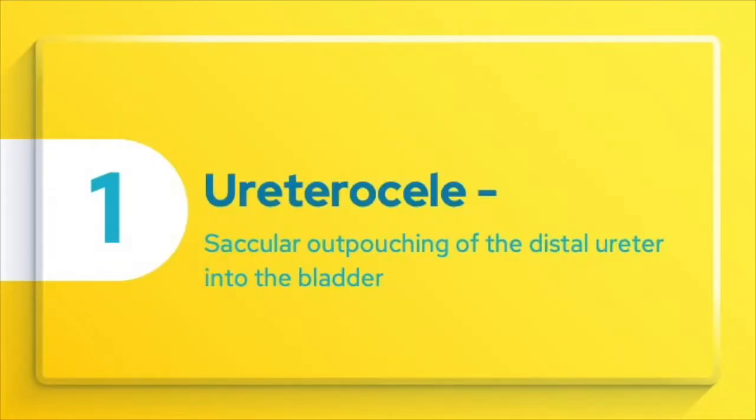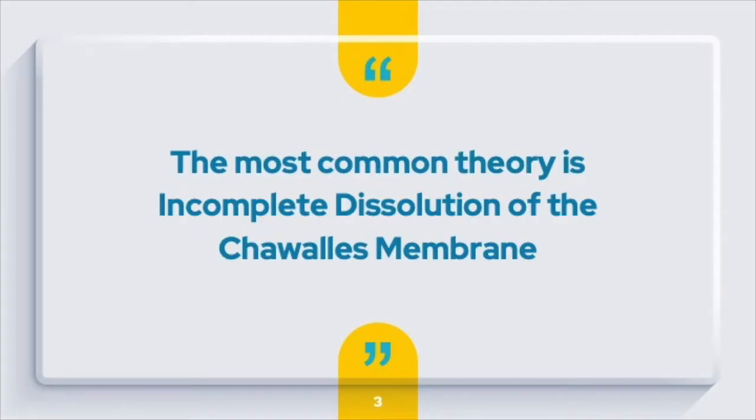Ureteroceles are saccular outpouchings of the distal ureter into the bladder. These are congenital conditions and the most common theory is incomplete dissolution of the Chavalles membrane in utero.